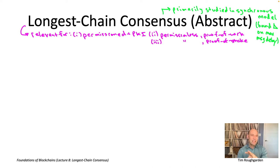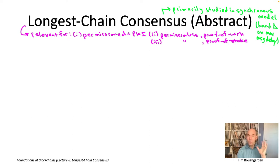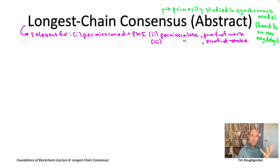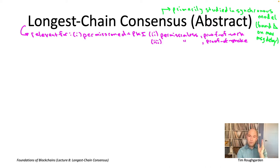I have to warn you: the permissioned, synchronous, PKI version of longest chain consensus is basically a strictly inferior version of the state machine replication protocol from lecture two. In lecture two, using those same three assumptions, we reduced SMR to Byzantine broadcast and solved it via the Dolev-Strong protocol — satisfying termination, agreement, and validity even with 99% Byzantine nodes. What we get here from longest chain consensus is consistency and liveness only up to 49% Byzantine nodes.